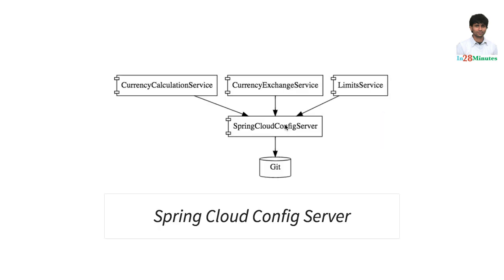As we discussed earlier, Spring Cloud Config Server is one of the best implementations for a centralized config server. What you can do is have all the applications connect to the centralized config server. You can have a Git repository where you store all the configuration, and connect the Spring Cloud Config Server to that Git repository. There's a folder structure and a convention that you would need to follow, but once you follow that, your individual microservices can say: I am this specific microservice and I am in this specific instance, and it would be able to get the configuration back.